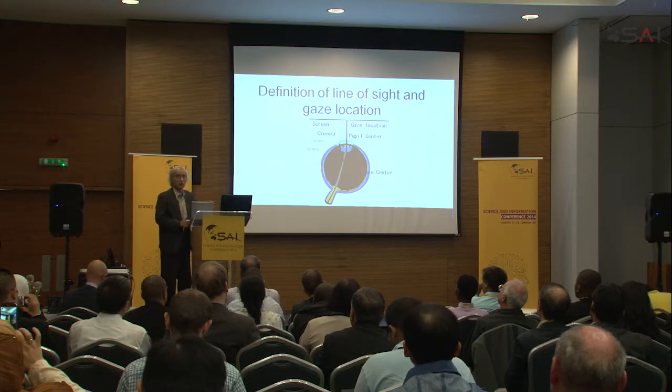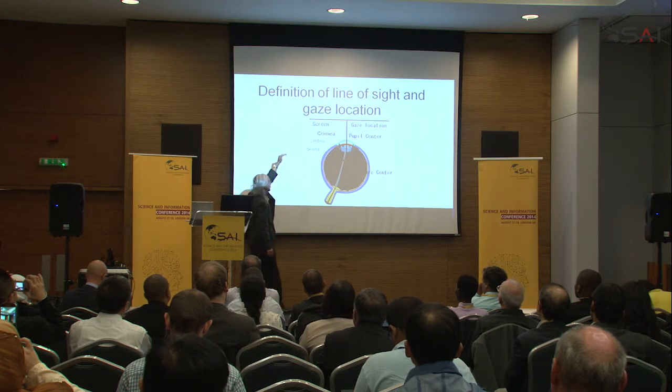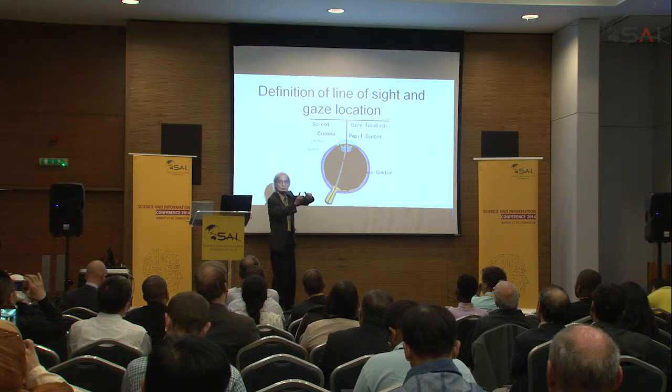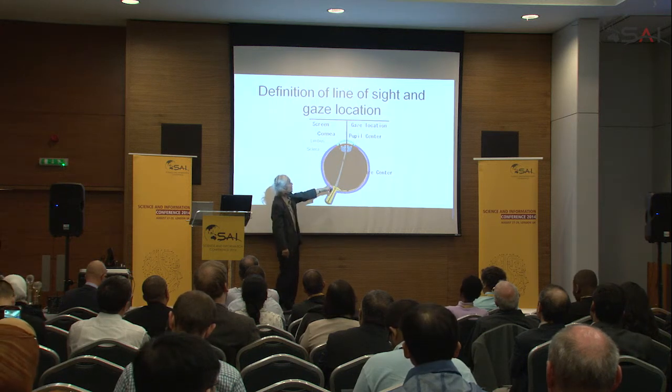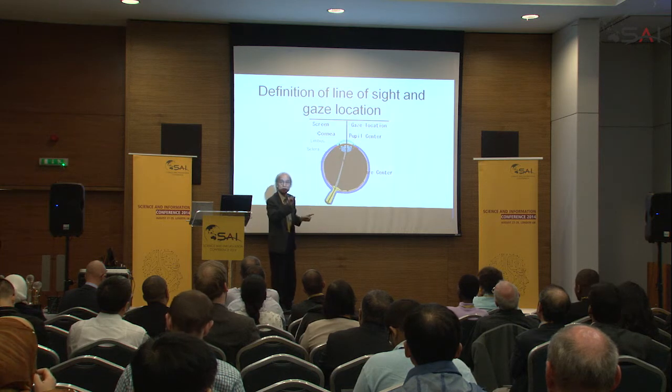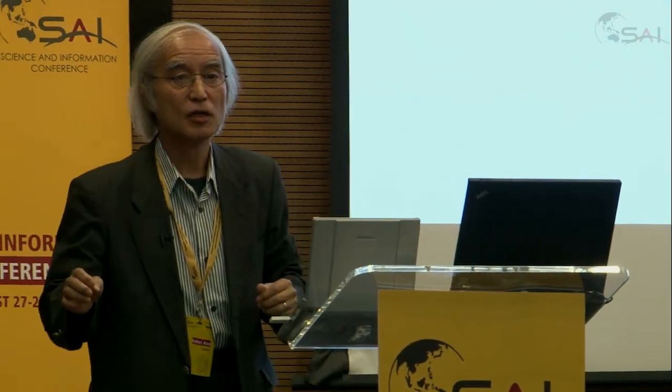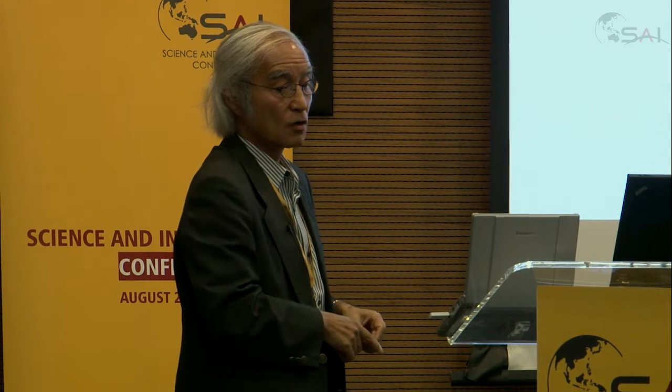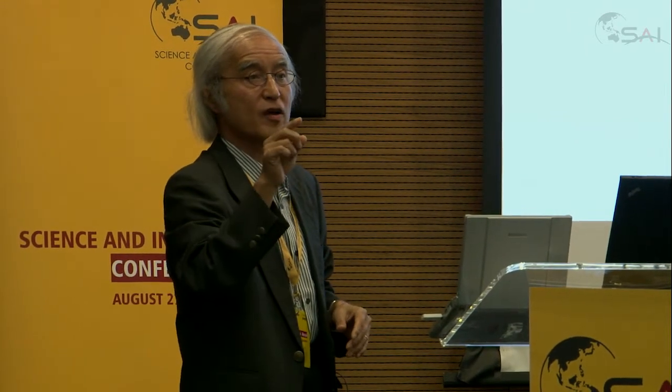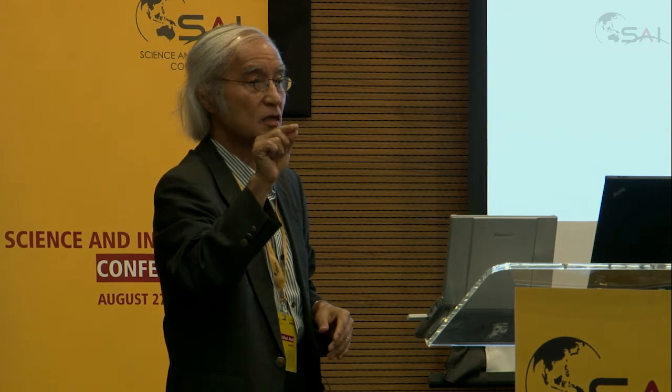The cross point of the computer screen and the line of sight is the gaze location. If we display a screen keyboard on the computer screen, then the computer can determine which key the user is looking at. This is the principle of computer input just by sight.